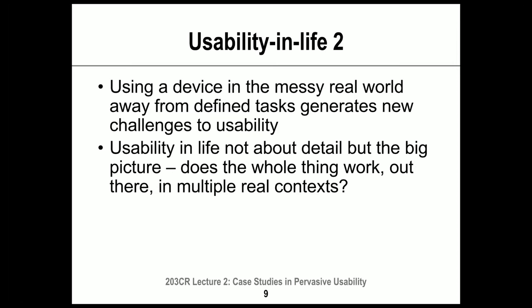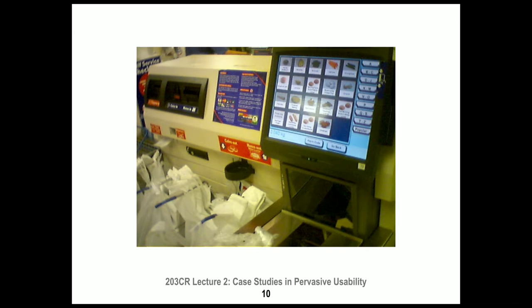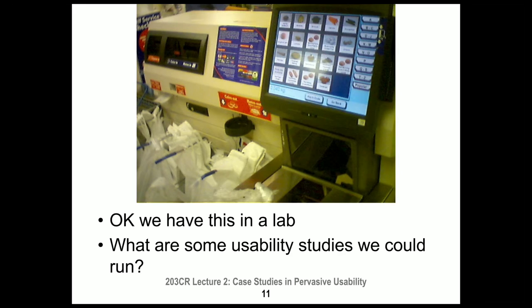If we're thinking about how usable something is in everyday life, we're not looking at small details but the big picture — does the whole thing work for people across multiple contexts? Think about an automated checkout in a supermarket. You take your shopping, scan it through, put it in your bag, pay, get your receipt and walk away. This technology is built into the real world and supports real people with real intentions — buying food for dinner, not participating in a usability test.